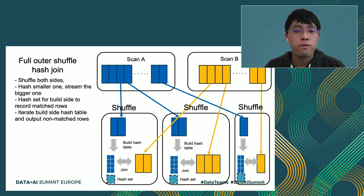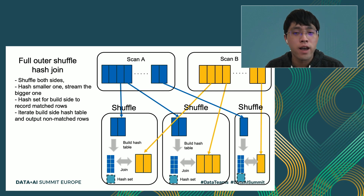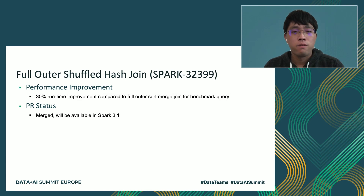Here is a figure for how full outer shuffle hash join works. First, we do shuffle on join keys on both sides. Then we build a hash table on the smaller side for each task. When joining each row from the stream side, we maintain a separate hash set data structure to record matched rows from the build side. After reading all rows from the stream side, we go over all rows from the hash table again and output the non-matched rows. For benchmark queries, we are seeing 30% runtime improvement compared to full outer sort merge join. The PR is merged into upstream and will be available in Spark 3.1.